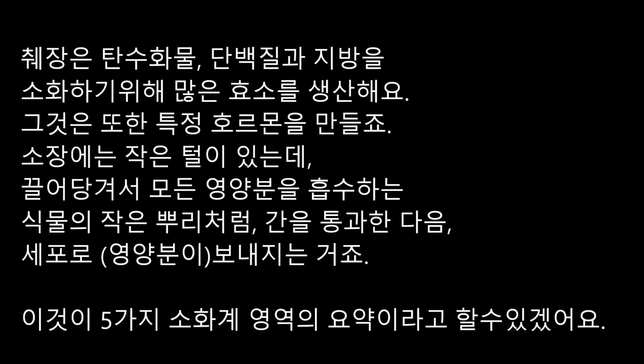췌장은 탄수화물, 단백질과 지방을 소화하기 위해 많은 효소를 생산해요. 그것은 또한 특정 호르몬을 만들죠. 소장에는 작은 털이 있는데, 끌어당겨서 모든 영양분을 흡수하는 식물의 작은 뿌리처럼 간을 통과한 다음 세포로 보내지는 거죠. 이것이 다섯 가지 소화기계 영역의 요약이라고 할 수 있겠어요.